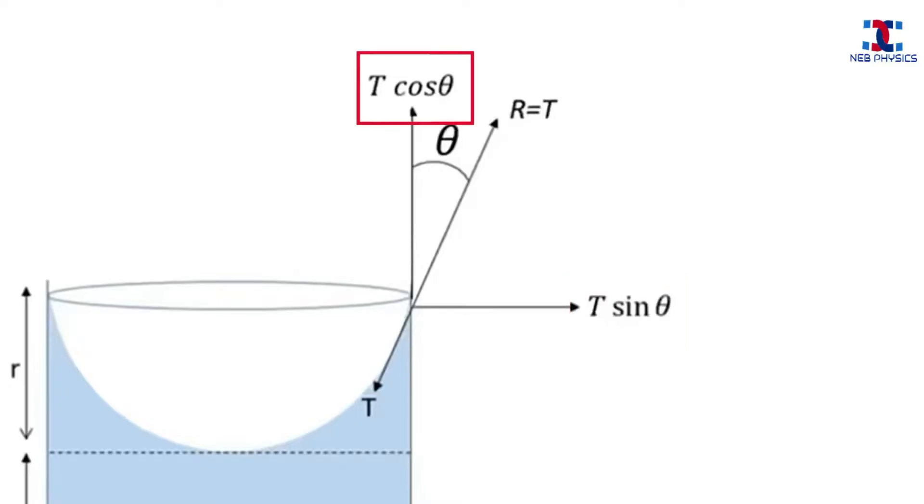So it is only the vertical component of surface tension, T cos θ, that holds the weight of liquid in the tube.